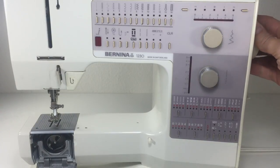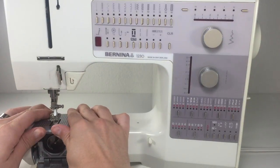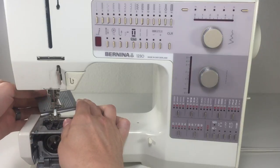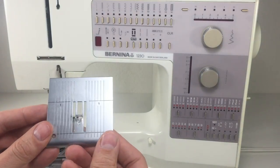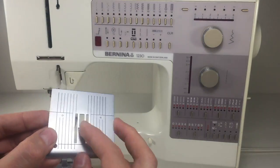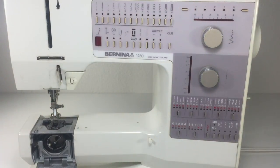In order to remove the needle plate on this machine I need to rotate the hand wheel so the feed dog drops, and then push slightly towards the back while lifting the front. Then we'll set this needle plate aside and address the dings and dents later on.